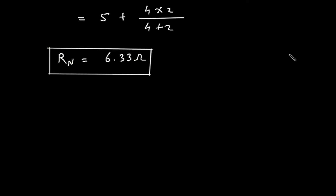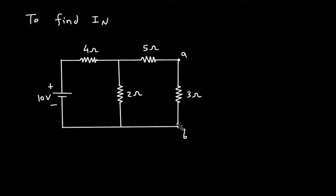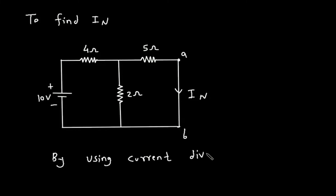Next we have to find In. To find In, we have to short circuit terminal A and B. We have to remove this RL first and short circuit terminal A and B. This will be current In. Now we have to find this current In. We can find this by using the current division rule.